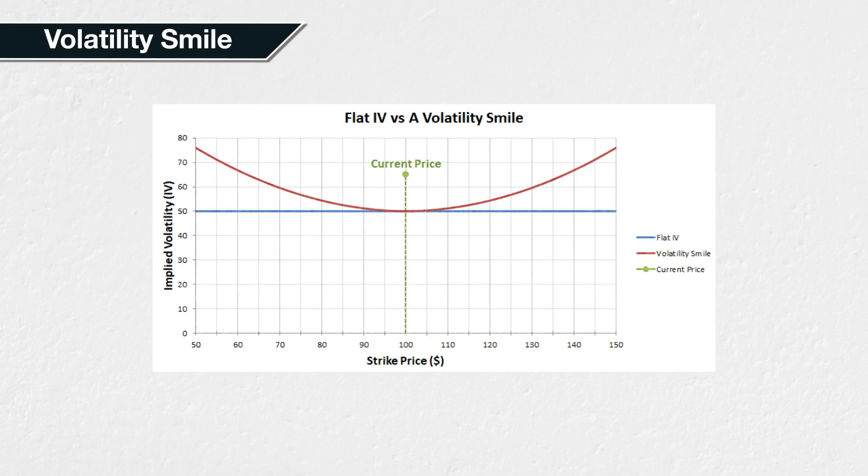However, in the real world, larger moves can happen more often than is predicted if we assume a normal distribution, due to the fatter tails of the distribution mentioned earlier. Many market participants — that is, traders buying and selling options — are aware of this, and so they tend to price options towards the extremes of the curve higher to account for this. This leads to a smile in the implied volatilities of each strike, as we see here in red.